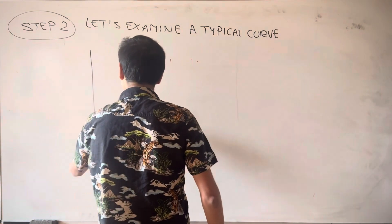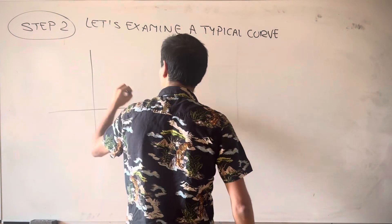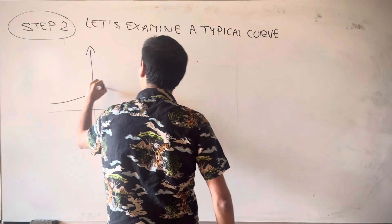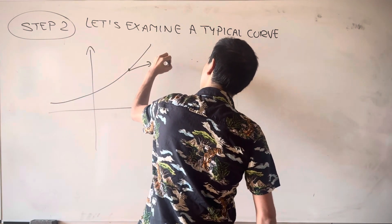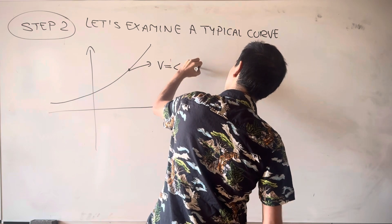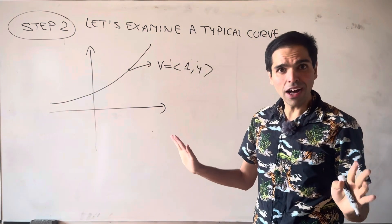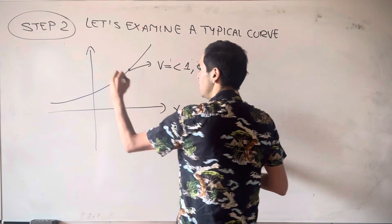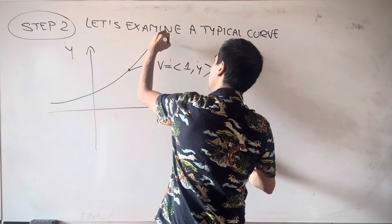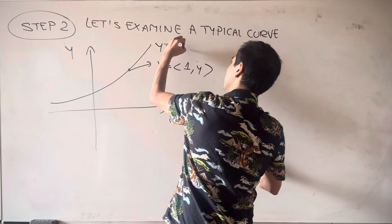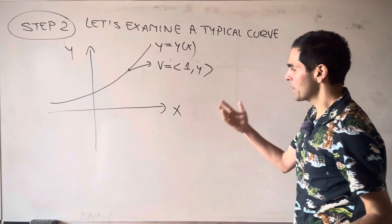Because what do we have? We have this curve directed by v, which is 1 comma y. And again, in this case, in order to do calculus on this, well, let's assume that the curve y is a function of x. So y is y of x.